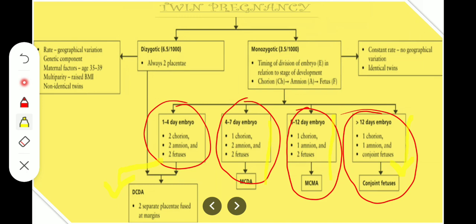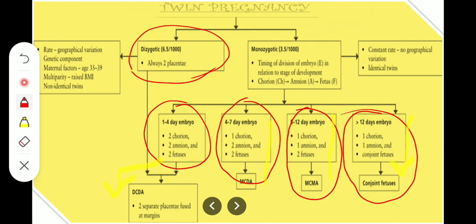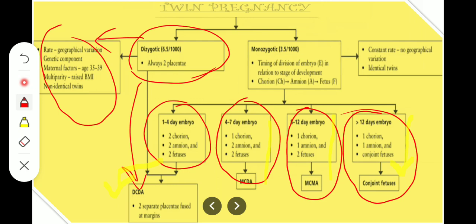Now coming to the dizygotic form — incidence 6.5 per 1000. With dizygotic twins, we always have 2 placentas, so we get dichorionic diamniotic, that is 2 placentas fused at the margin. The dichorionic rate depends upon geographical variation, genetic components, and maternal factors like age 35 to 39, multiparity, raised BMI, and non-identical twins.